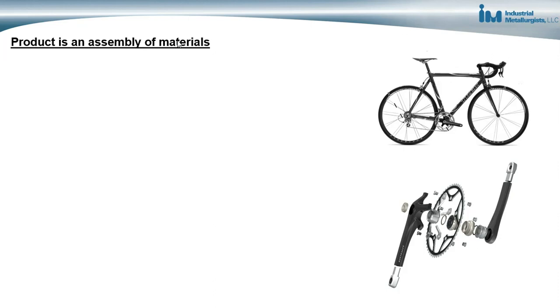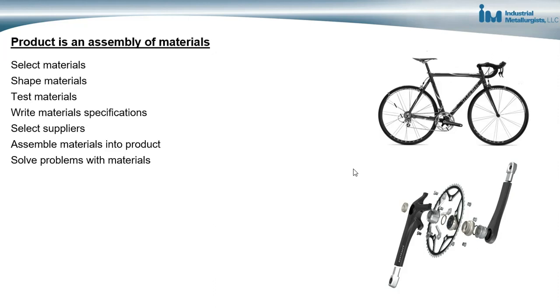I look at any product as an assembly of materials. Here's a bicycle — and this is a close-up of the crank assembly — and you can see all these different components. All of these are comprised of different materials that have been shaped and manipulated and modified to have specific properties, helping the component meet performance requirements, reliability requirements, and cost requirements. If we look at each component as a specific material that's been shaped and modified, we can see a product as an assembly of materials.